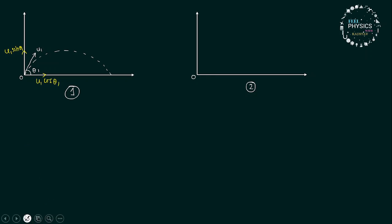The other one traverses a path like this, with a projection angle θ2 and velocity u2. So, the components will be u2 cosθ2 and the vertical component is u2 sinθ2.